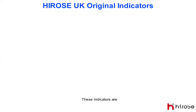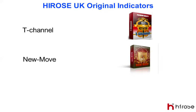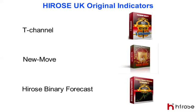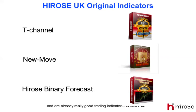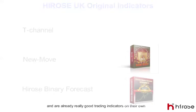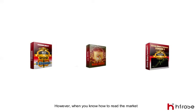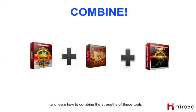These indicators are T-Channel, NewMove, and Udossi Binary Forecast. These tools all have different functions and are already really good trading indicators on their own. However, when you know how to read the market and know how to combine the range of these tools, trading will become really easy.